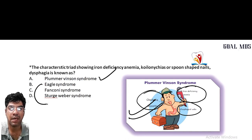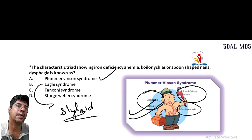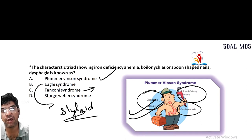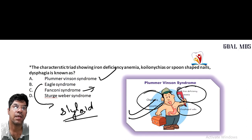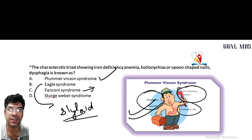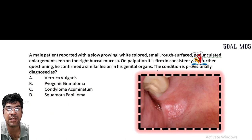Other options: Eagle syndrome involves elongation of the styloid process causing pain in the throat region, or there can be calcification of the styloid ligament. Fanconi syndrome is a genetic disorder affecting renal tubules leading to impaired resorption of glucose, amino acids, and electrolytes. Sturge-Weber syndrome is a congenital disorder characterized by facial birthmarks. So the answer is Plummer-Vinson syndrome.